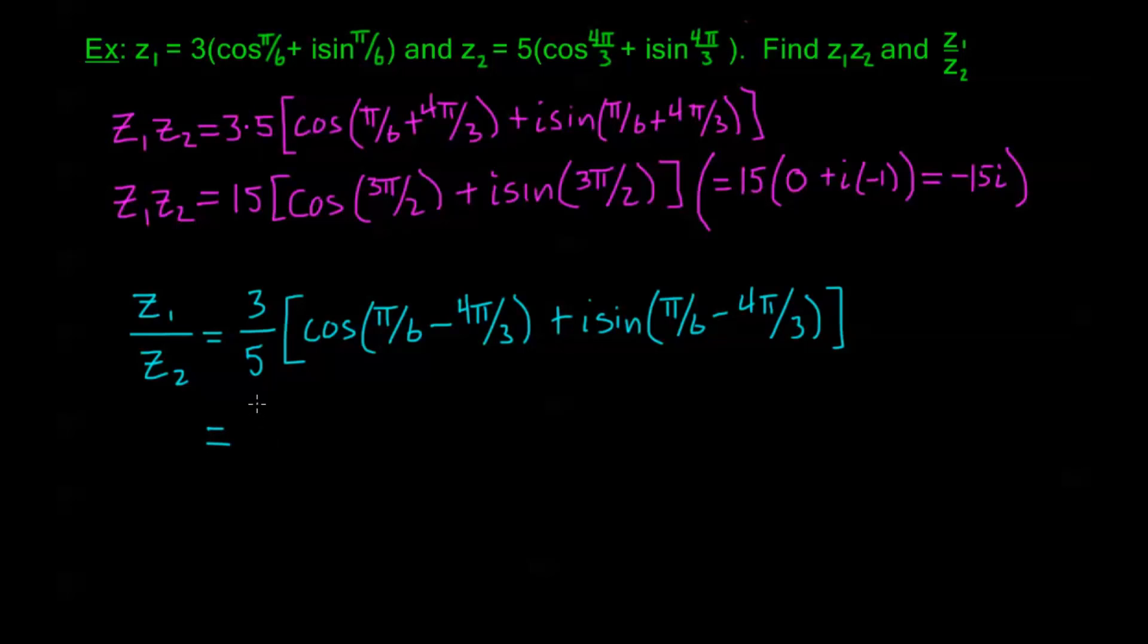Now simplifying this down, this modulus outside is just 3/5. But I have cosine—π/6 minus 4π/3 is the same as π/6 minus 8π/6, so this is negative 7π/6. And I have plus i sin(negative 7π/6).